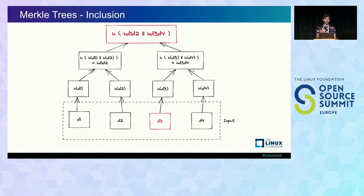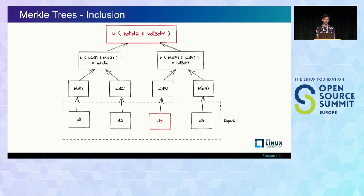One way to calculate inclusion might be to give you every single leaf node in the tree, along with the root hash. You can then recalculate that root hash by taking pairs of nodes, calculating the parent, and so on up to the root. If you can calculate the same root hash value, you know some element was in the tree. The problem with this solution is having to give you every single leaf node. If there's a million or a billion leaf nodes, it doesn't make sense to calculate inclusion for every single node if you only care about one. Typically the log will have a signing key and create a signature over that root hash, so you just need the log's verification key provided out of band.